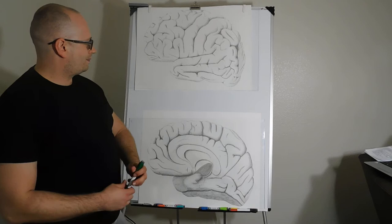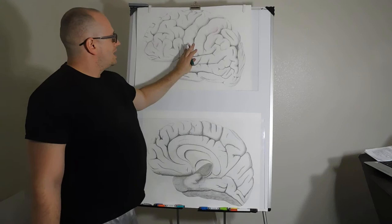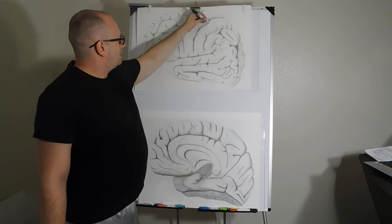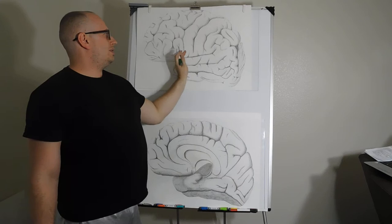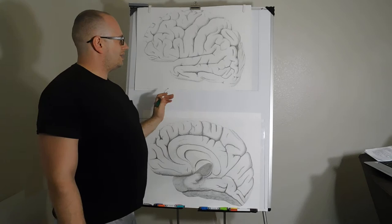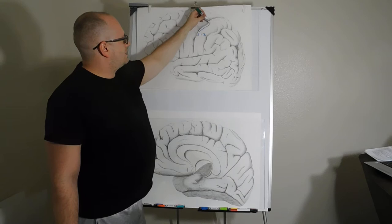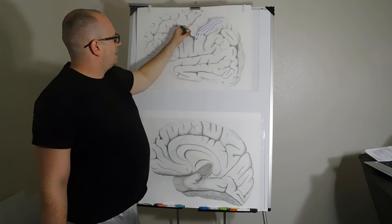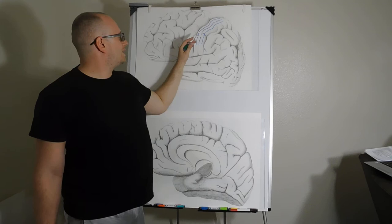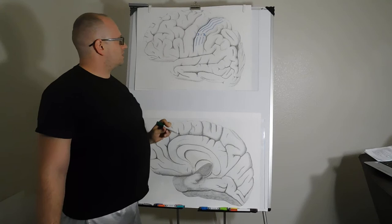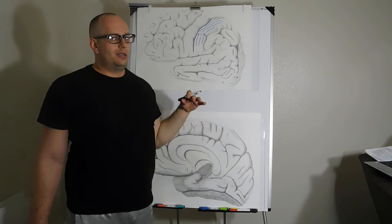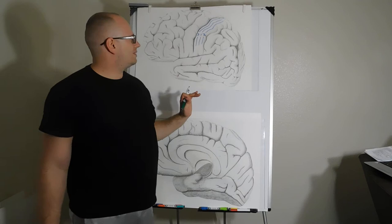Brodmann's areas 1, 2, and 3 are found in the primary somatosensory cortex, in the post-central gyrus which is posterior to the central sulcus. Areas 3, 1, and 2 go along this gyrus and continue down. Areas 3a and 3b are found within the central sulcus itself and pertain to proprioception and tactile sensations, while 1 and 2 represent different sensory modalities.